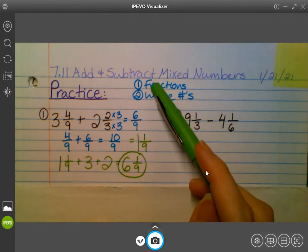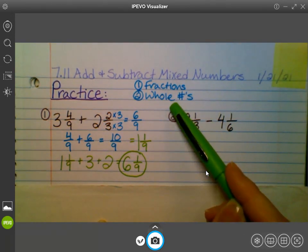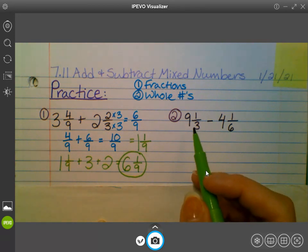Same thing. We always start with the fraction part of our mixed number. Then we do the whole number. So our fractions, we have 1 3rd minus 1 6th. So the first step, before we can do anything, we always have to find that LCD, the least common denominator.